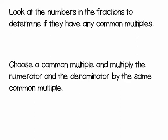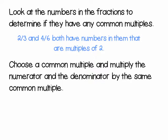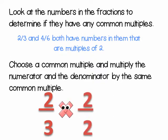First, look at the numbers in the fractions to determine if they have any common multiples. For example, two-thirds and four-sixths both have numbers in them that are multiples of two. Then, choose a common multiple and multiply the numerator and the denominator by the same common multiple.